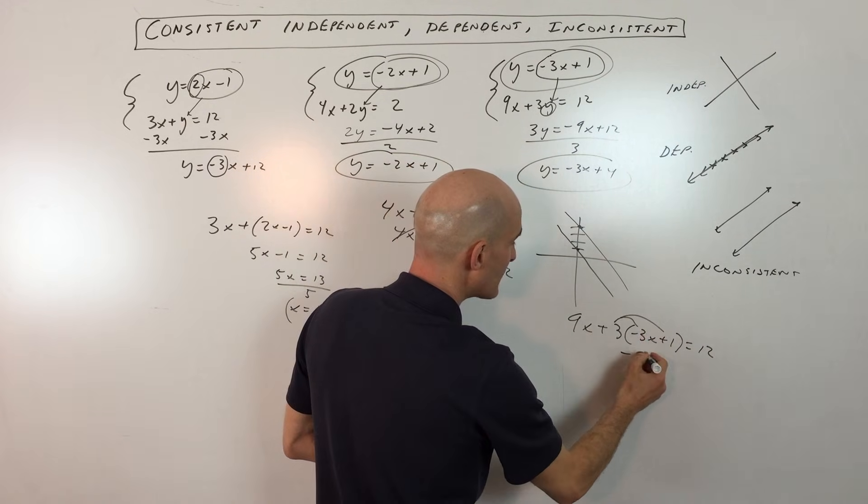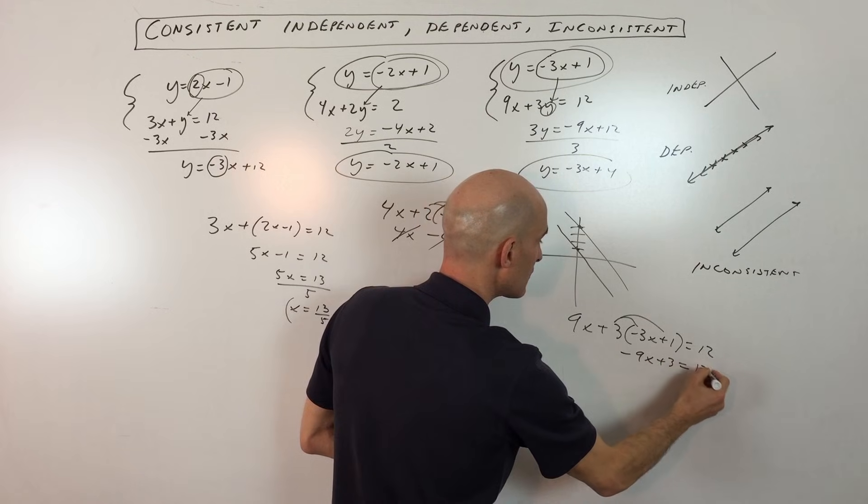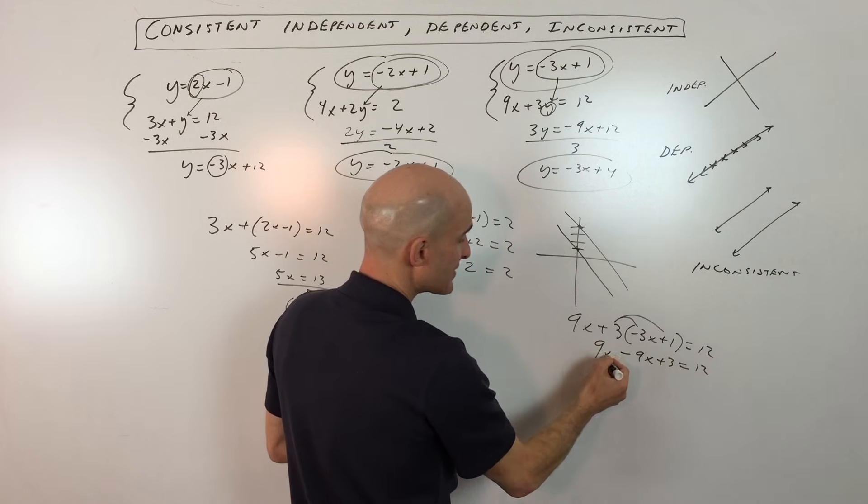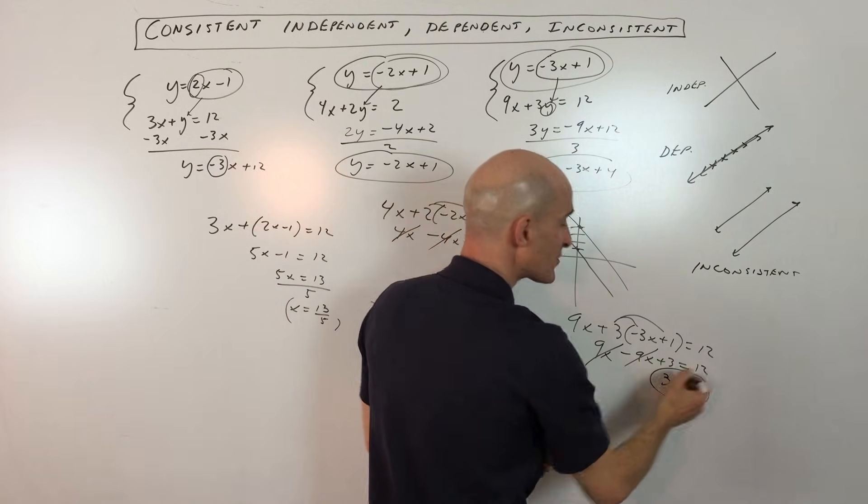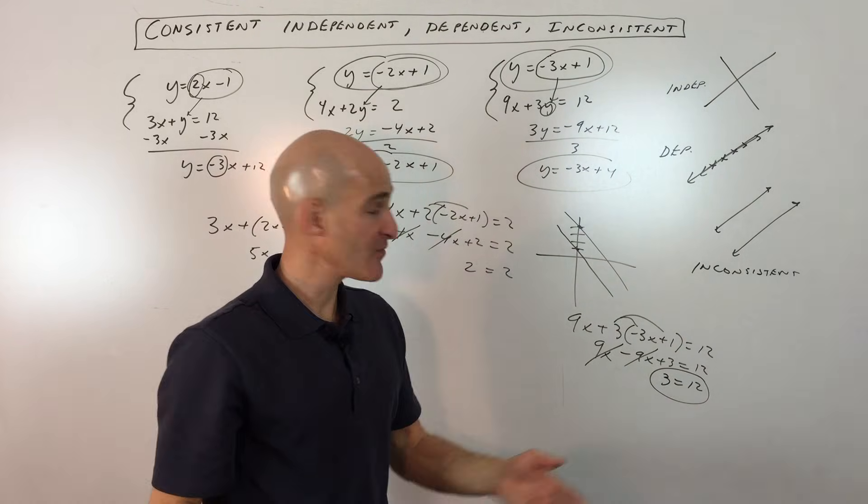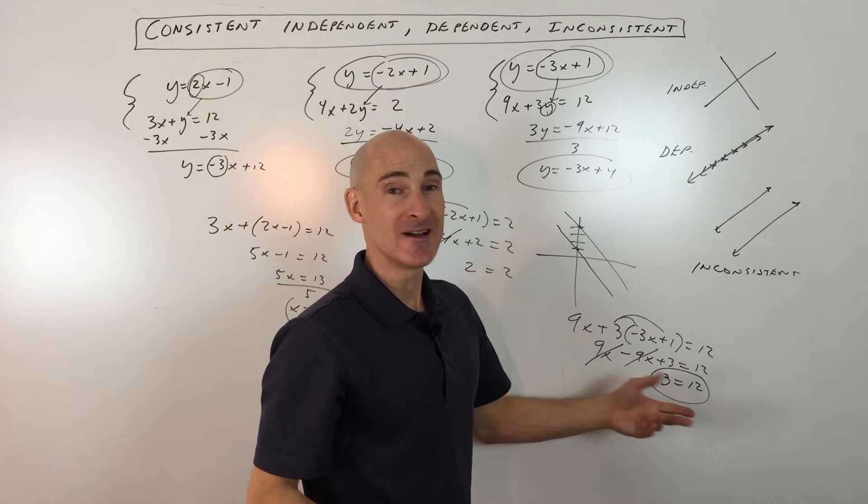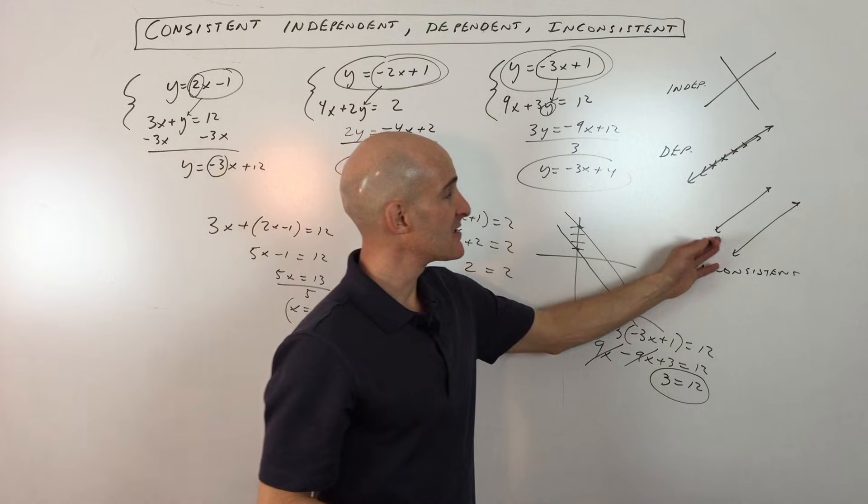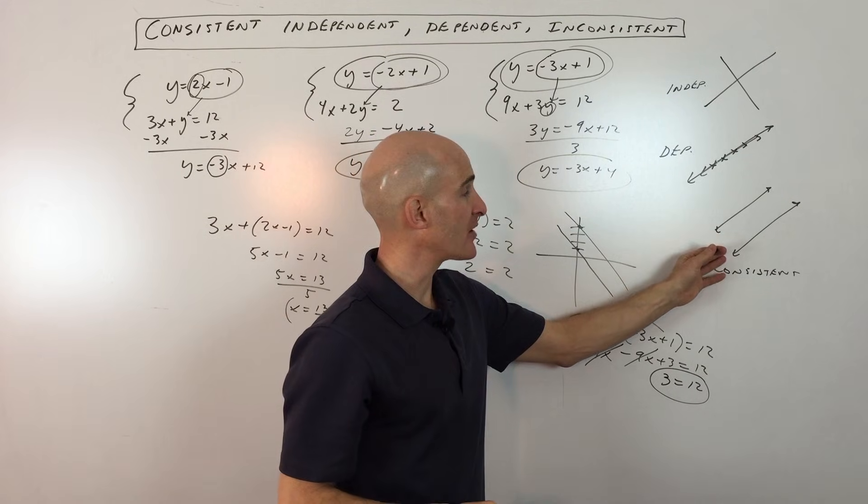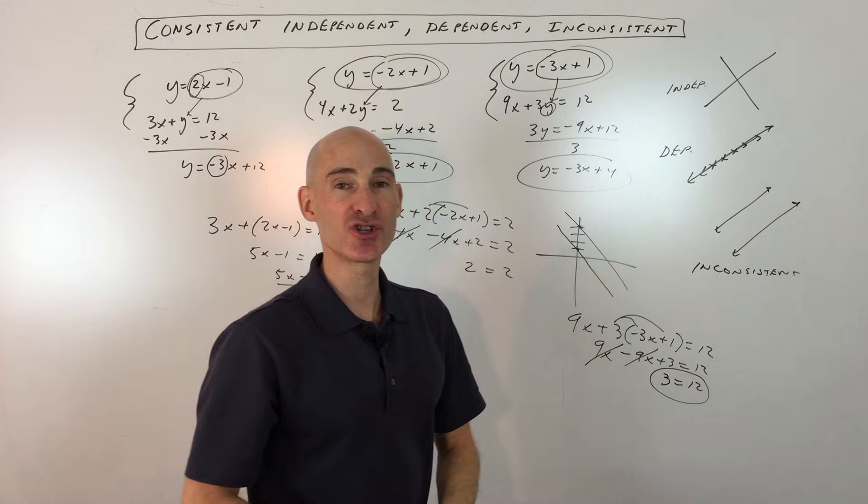Distribute the 3. Look what happens here. Again, you notice the 9x and the negative 9x, you see the variables canceling out. And then what we're left with is basically what's called a nonsensical answer. It doesn't make any sense. Like 3 equals 12, that'll never be true. And what that indicates to us is that these lines, they don't have a point in common. They're not going to cross. It's inconsistent. You could say there's no solution.